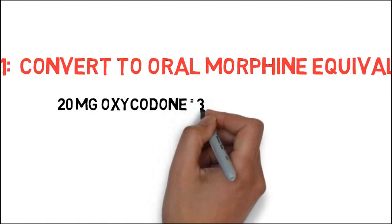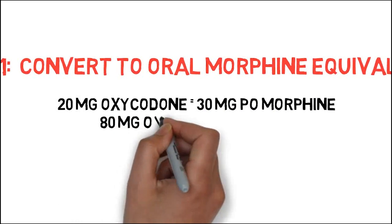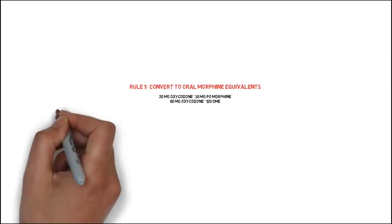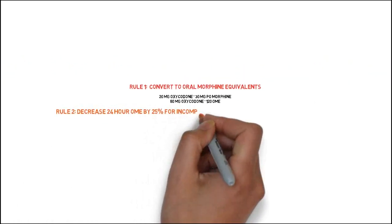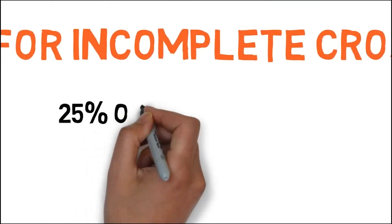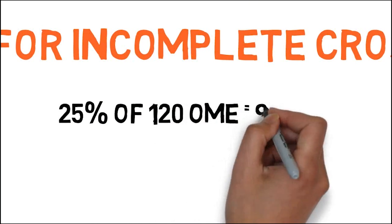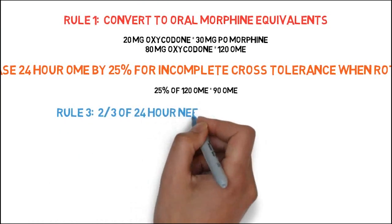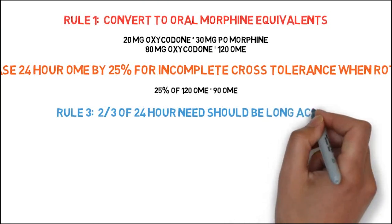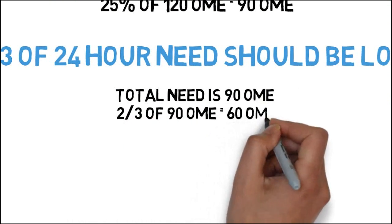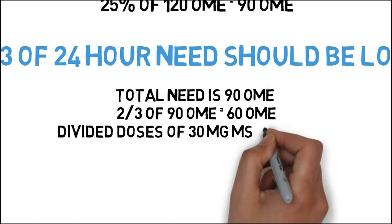For this patient, 80 mg of oxycodone in 24 hours equals 120 OME. For rule two, we adjust for incomplete cross-tolerance as we convert from oxycodone to morphine — reducing the total OME by 25%, so 25% of 120 OME gives us 90 OME for 24 hours. For rule three, the long-acting dose is two-thirds of 90 OME, which equals 60. Therefore, we prescribe long-acting morphine as MS-Contin 30 mg tablets twice daily.